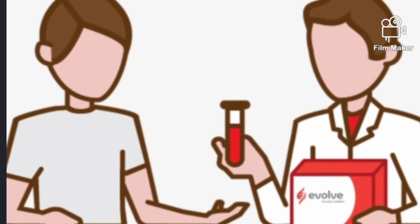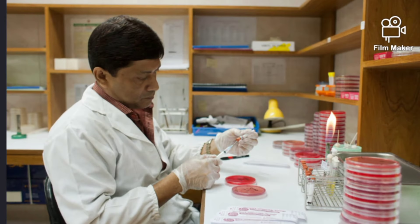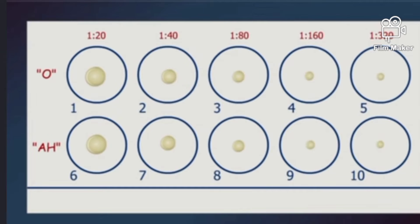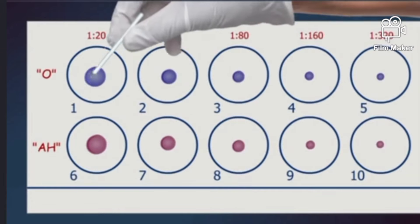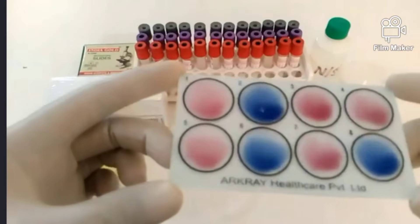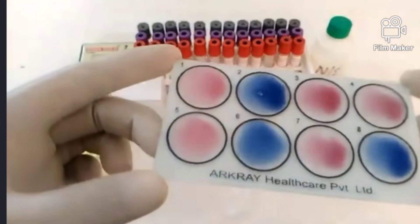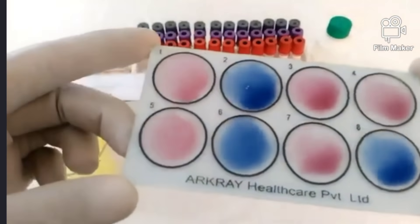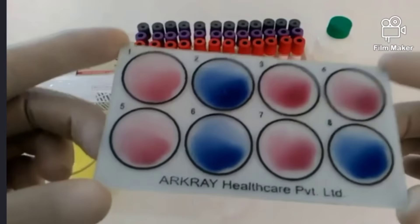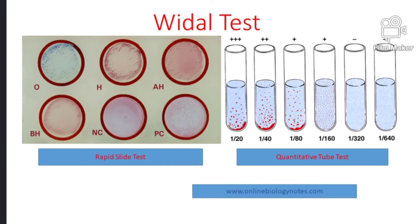This collected blood sample is mixed with antigens or chemical reactants in the lab. They will observe an agglutination reaction — that is, an antigen-antibody reaction. Based upon the antigen-antibody reaction, they will generate a report.